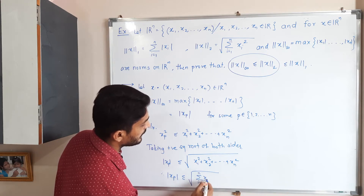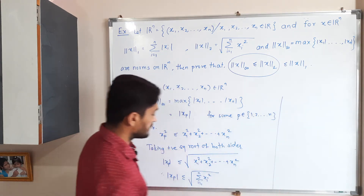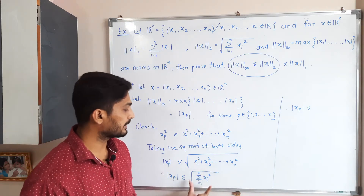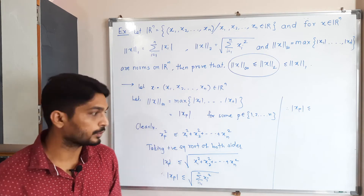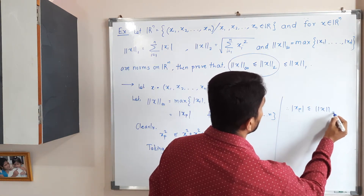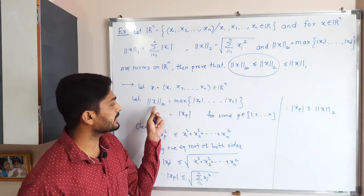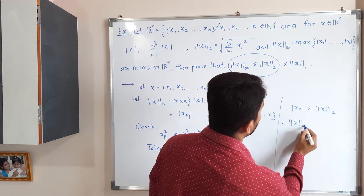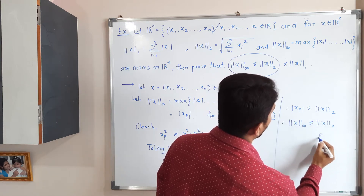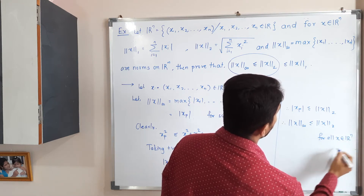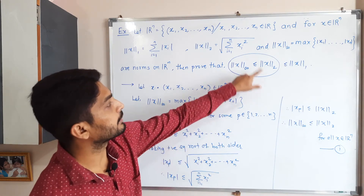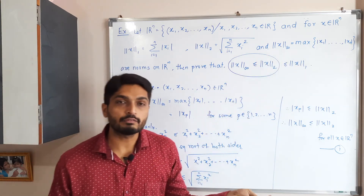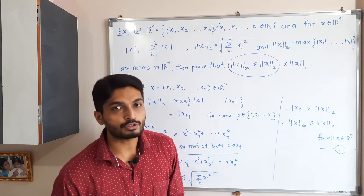We can write this in summation form: |x_p| ≤ √(Σᵢ₌₁ⁿ xᵢ²). Have you seen this term anywhere? Yes — this is the definition of norm 2. So this is less than or equal to ‖x‖₂. Since |x_p| is the maximum element, |x_p| = ‖x‖∞. Therefore, ‖x‖∞ ≤ ‖x‖₂, and this is true for all x ∈ ℝⁿ. This completes the proof of the first part.